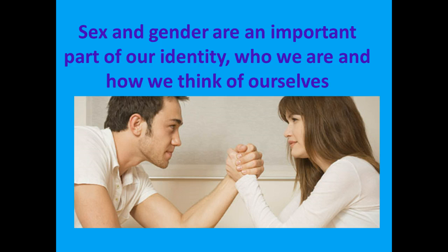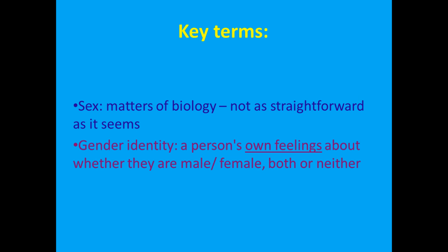In everyday life, sex and gender are often used to mean the same thing, but in psychology, sex is a biological term, whereas gender is more to do with how a person thinks or behaves. Sex and gender are often related, but not always. It is possible for a girl to be a tomboy and display masculine behaviours. Similarly, an individual can be male but display feminine behaviours.